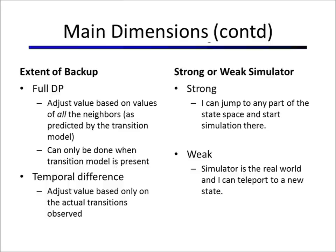In value iteration our basic tool was Bellman backup, but now we can't do Bellman backup because we don't have the transition probabilities. For Bellman backup we need to take the transition probability over all successor states. If we don't have them, we can never do full backup. This leads to TD learning — Temporal Difference Learning. Another dimension is whether we have access to a simulator, where we can jump to any state and simulate the future, which is called Monte Carlo planning.